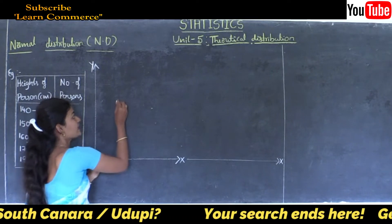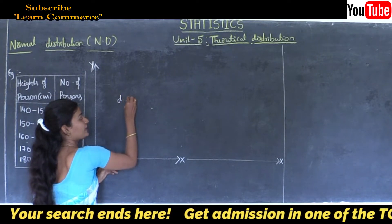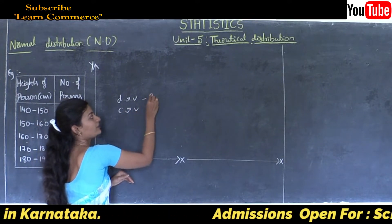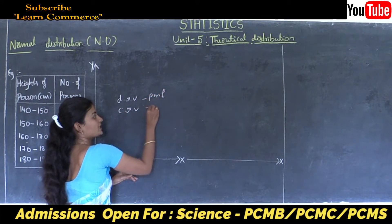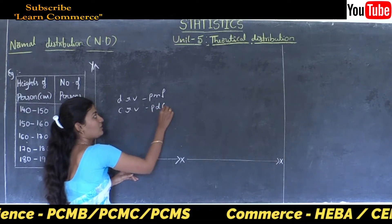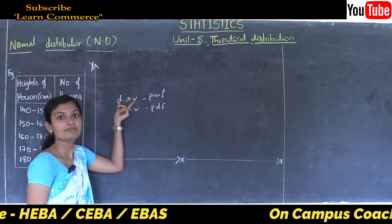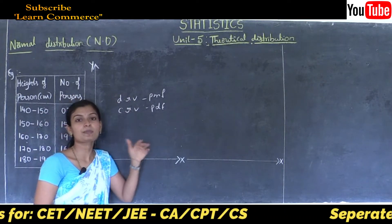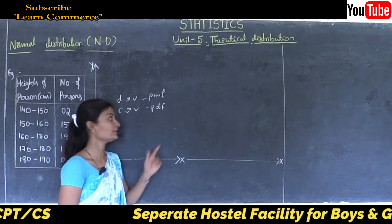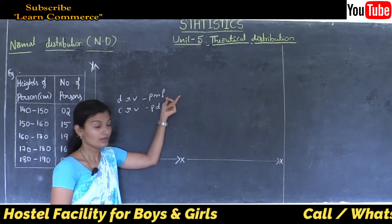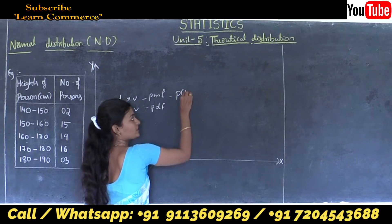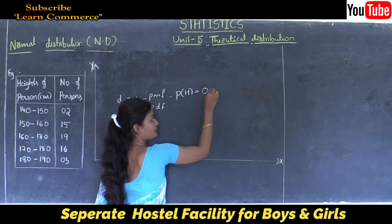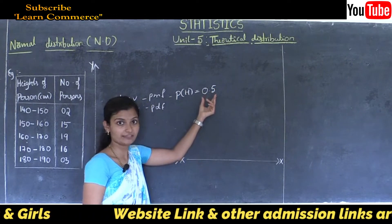In the previous section we discussed what is a discrete random variable, what is a continuous random variable, what is a probability mass function, and what is a probability density function. For discrete data we can point towards the exact probability of an event. For example, the probability of obtaining a head when tossing a fair coin — we know that P(H) is equal to 0.5, which is an exact probability value.